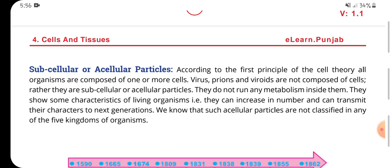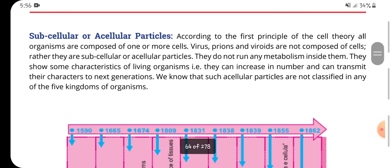To restate, the first principle of cell theory is that all organisms are composed of one or more cells. Viruses, prions, and viroids do not compose cells but are subcellular or acellular particles. They do not run any metabolism, yet they show characteristics of living organisms — increasing in number and transmitting characters to the next generation — while cellular organisms are classified within the five kingdoms.